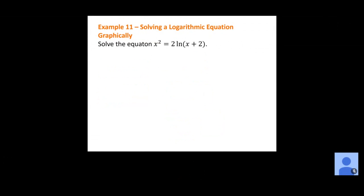Example 11: we want to solve x squared equals 2 natural log of x plus 2. This time I've got an x on the outside of a logarithm and an x on the inside, and I'll show you that there's really no way algebraically to get our x's by themselves.